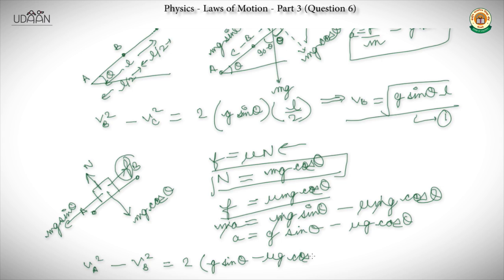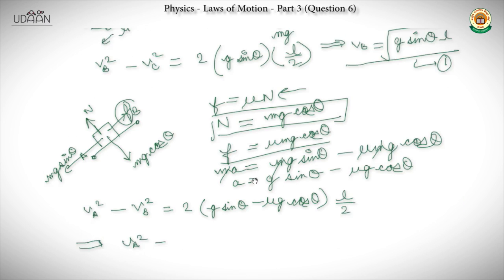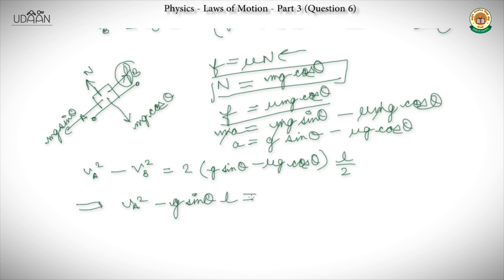We have equation 1 which gives us Vb². We substitute its value: Va² − g·sin θ·L = g·sin θ·L − μ·g·L·cos θ.